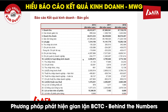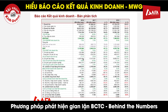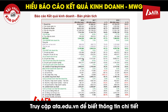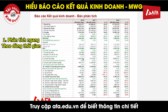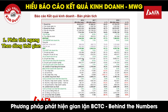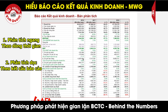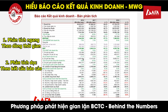Từ báo cáo kết quả kinh doanh gốc, chúng ta sẽ lập một bản báo cáo có thể sử dụng để phân tích và hiểu chi tiết hơn các khoản mục. Trên báo cáo phân tích này chúng ta sử dụng hai kỹ thuật: kỹ thuật thứ nhất là phân tích ngang, tức là phân tích theo dòng thời gian qua từng năm, xem các chỉ tiêu trên báo cáo kết quả kinh doanh tăng trưởng và thay đổi như thế nào.